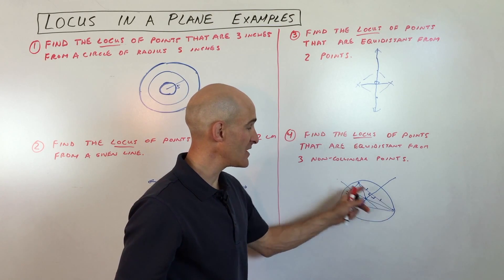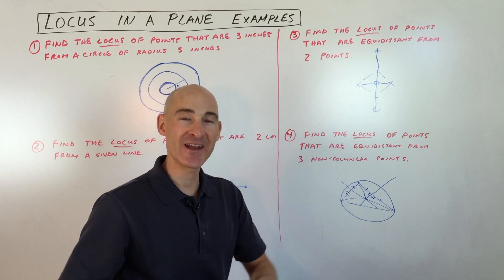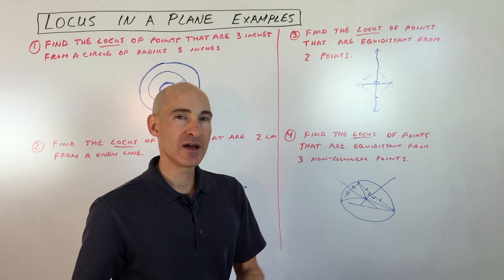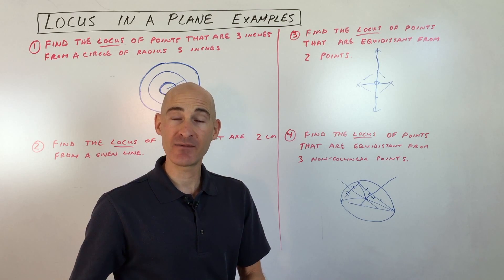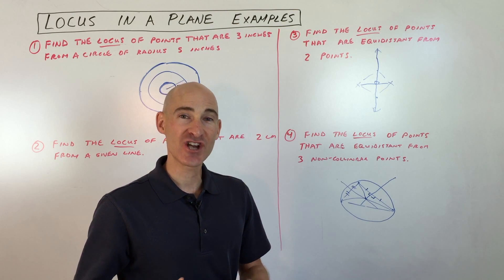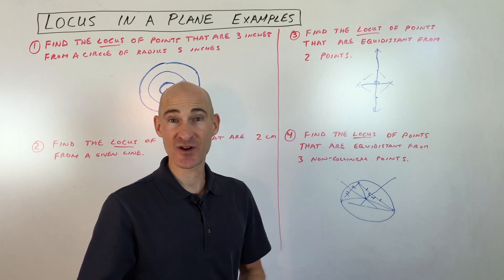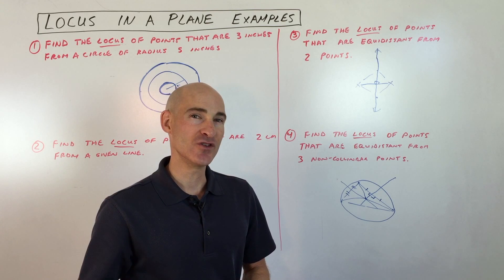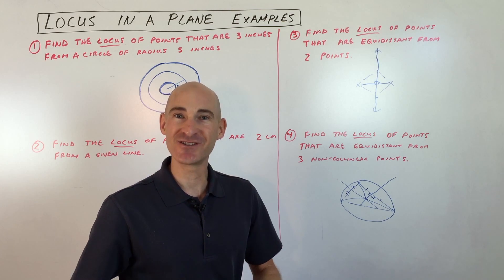That point is equidistant from the three non-collinear points in the plane — and that's it. I hope I gave you some helpful hints for working with locus-type problems. Check out my other video about finding the locus in three-dimensional space. Remember to subscribe to the channel, and I'll talk to you soon.